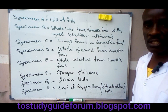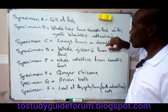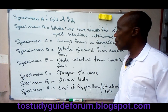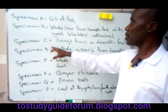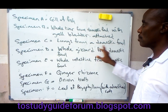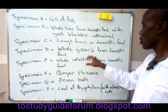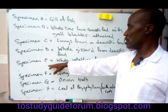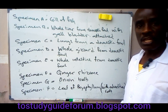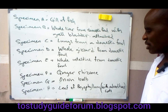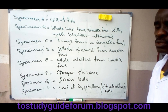In the specimen list: Specimen A is a tilapia fish. Specimen B is a whole liver from a domestic fowl with the gallbladder attached. Specimen C is lungs from a domestic fowl. Specimen D is a whole gizzard from a domestic fowl. Specimen E is whole intestine from a domestic fowl. Specimen F is ginger rhizome. Specimen G is an onion bulb. And Specimen H is a sleeve of Bryophyllum with adventitious roots.